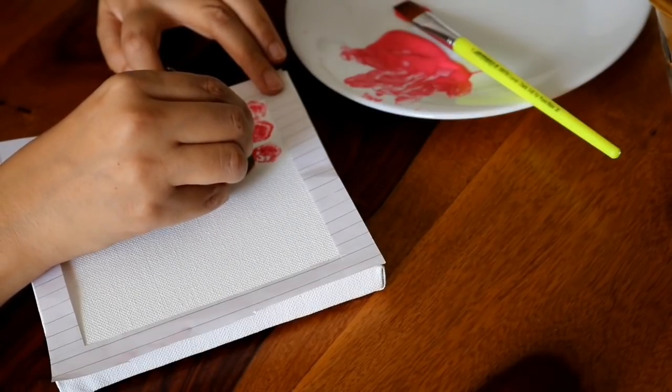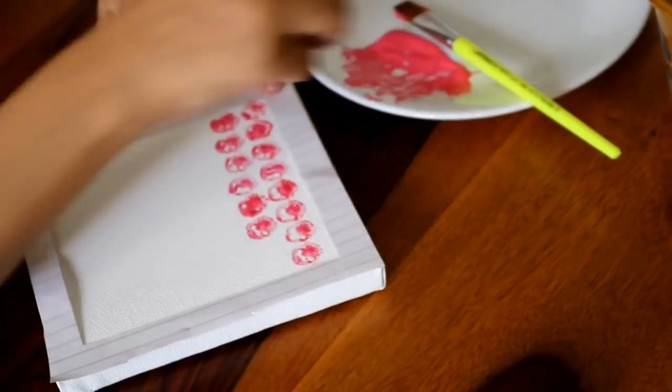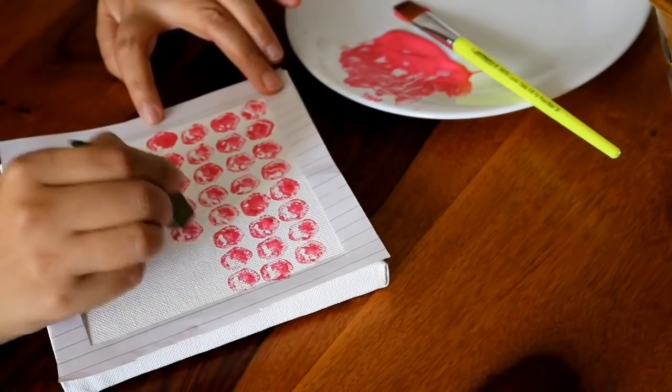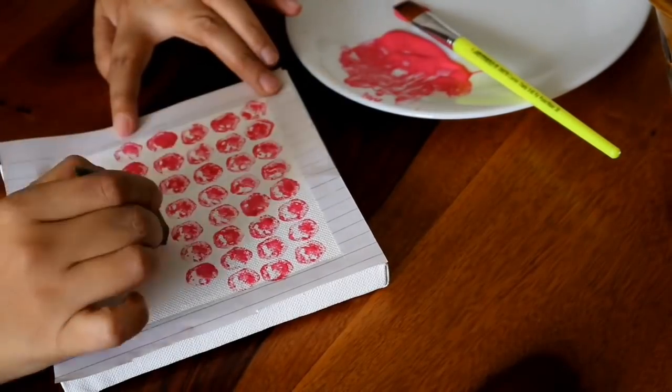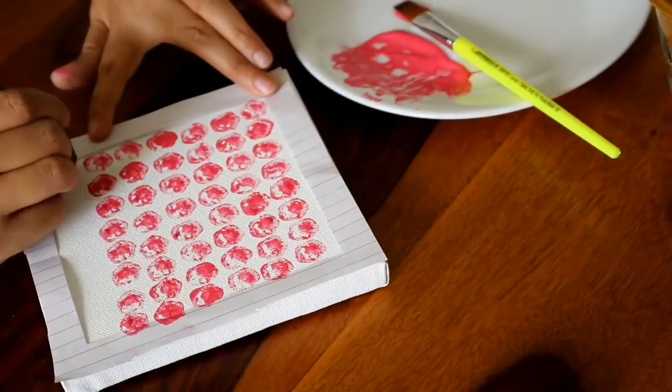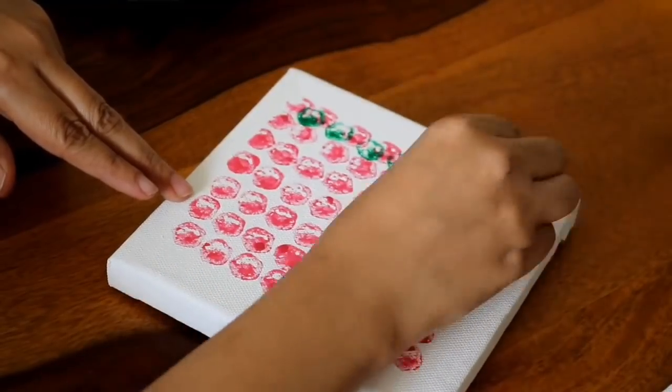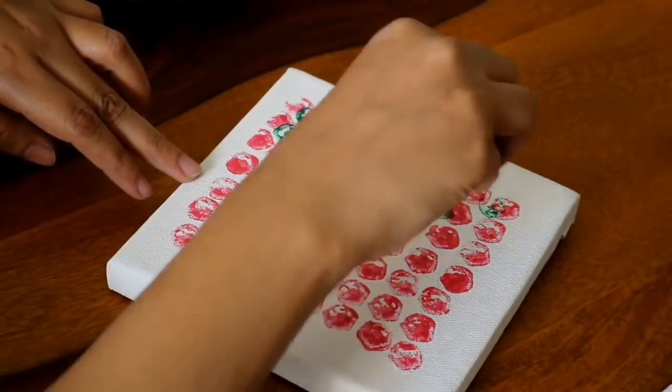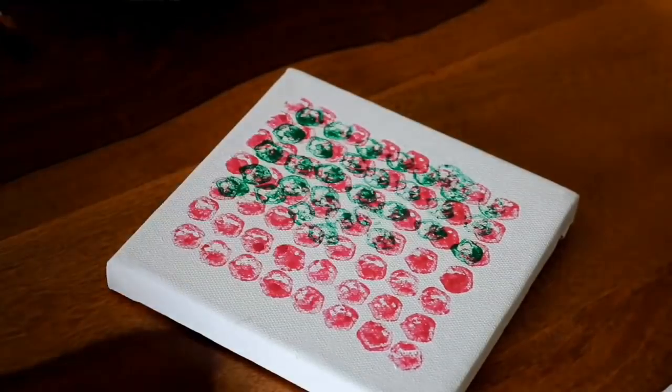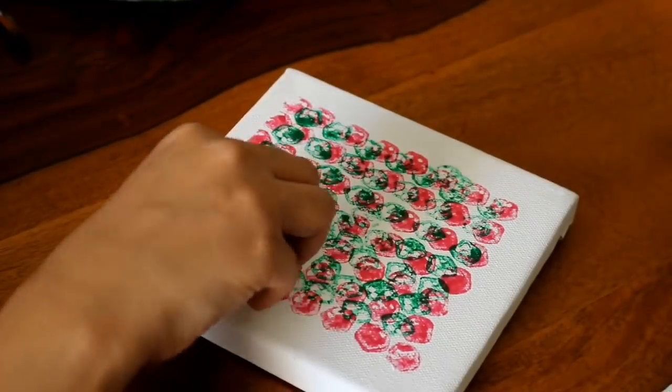As you can see, I simply stamp in rows and columns. You have to randomly stamp it. You don't need to follow any pattern. You have to be careful that you should use the contrast colors for stamping.